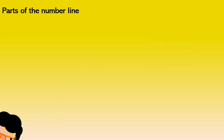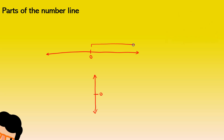First of all, in order to understand the number line, we really have to dig deep and see the parts it consists of. So whenever we have a number line, we have a usually horizontal or vertical line. We're always going to have zero in the middle. And then, if it's a horizontal line, we're going to have positive numbers to the right in increasing order.